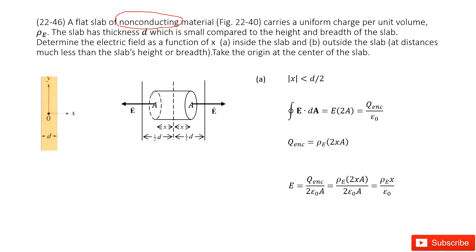So we can draw a Gaussian surface, look like this one. And we can see it tells us inside this object, the distance x from the center of this Gaussian surface to the boundary. So this length is x. And so this absolute value of x is smaller than d over 2. So this x is smaller than d over 2 to make sure it is inside.